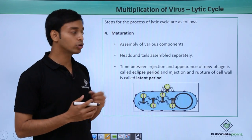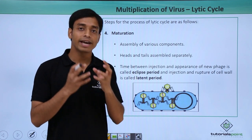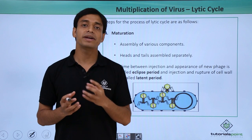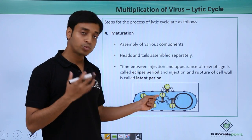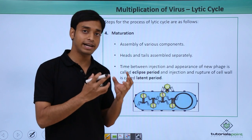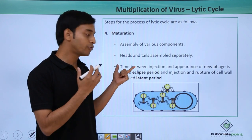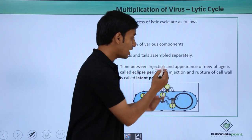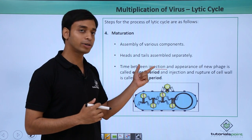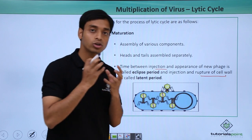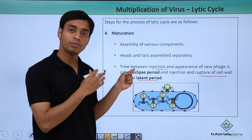The fourth phase is the maturation phase, where the assembly of various components occurs. The head, the tail, and the various tail components are made separately and then assembled together. There are two important time periods: the eclipse period, which is the time between injection and the appearance of the first new phage, and the latent period, which is the time between injection and the rupture of the host cell wall.